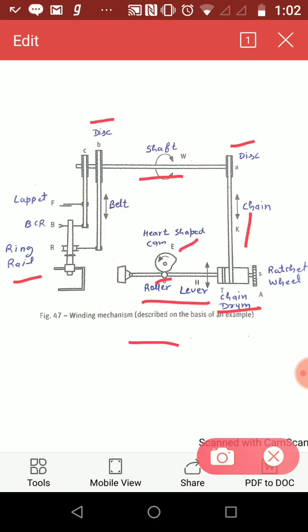The rotation of the eccentric heart-shaped cam presses the lever and the chain drum, continuously raising it up and down. This moment is transferred to the ring rail with the help of disk B and disk C together with the chain and belt, thus giving traverse movement.